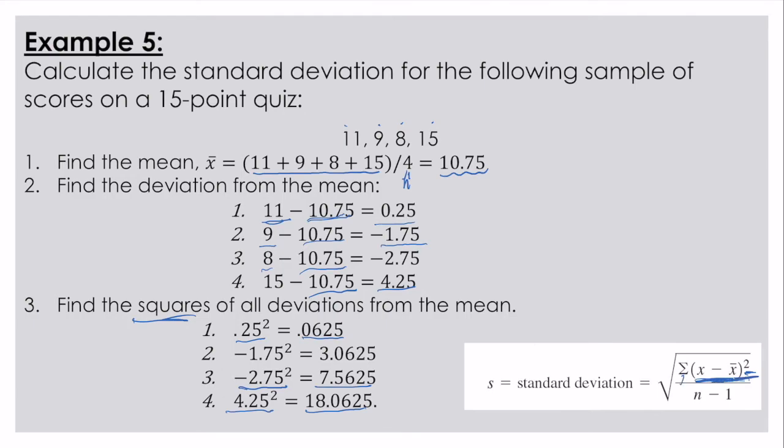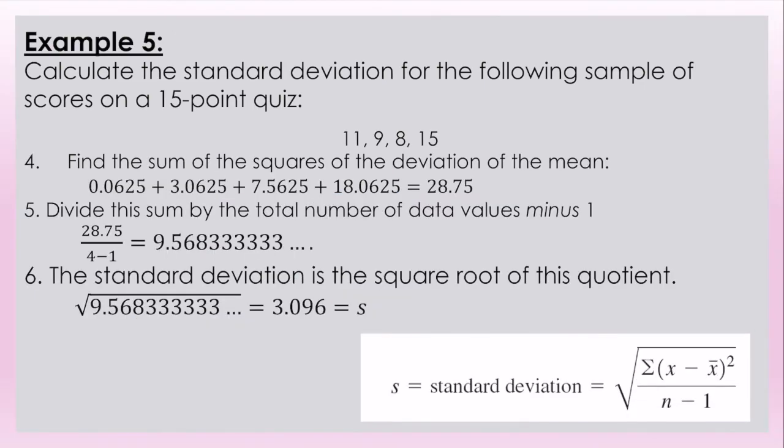The next thing we have to do is find the sum of all of these deviations from the mean. So I'm going to go ahead and add them together. I add them all up and I get 28.75. That's my sum. I then divide this sum by the total number of data values minus one. So I had four data values, we take away one. 28.75 divided by 3 equals 9.5666 and that goes on forever.